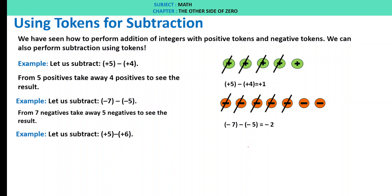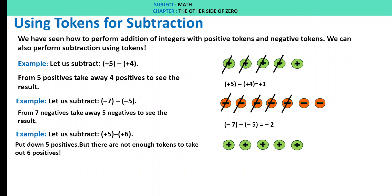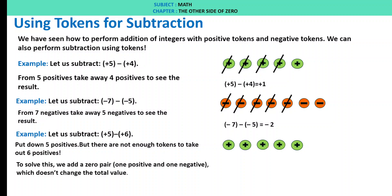Let us subtract plus 5 minus plus 6. We have plus 5 but need to remove 6. As we don't have enough tokens, we need to add a zero pair — that is, 1 positive and 1 negative — which doesn't change the total value. After adding a zero pair, we now have 6 positives and 1 negative. We take out 6 positives, and what is left is only 1 negative. Therefore, plus 5 minus of plus 6 is minus 1.